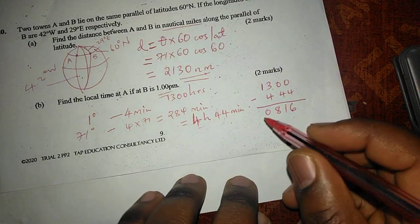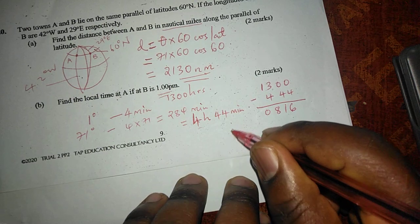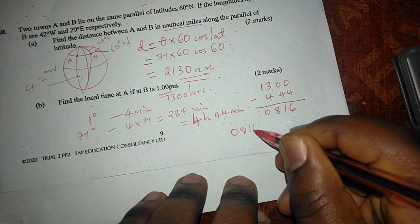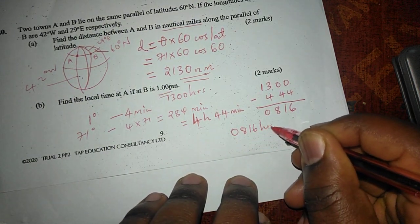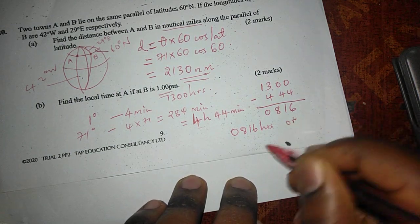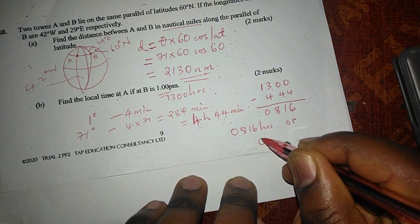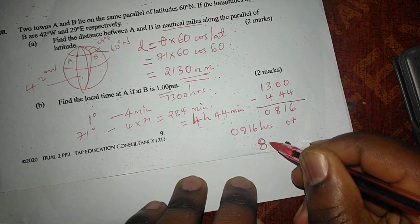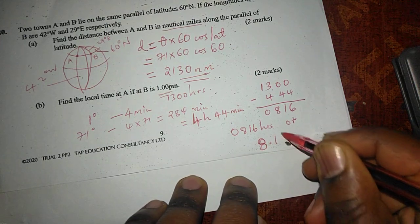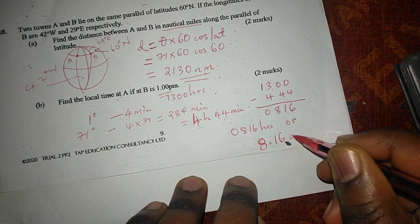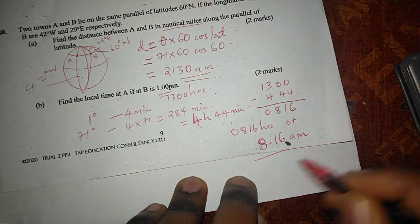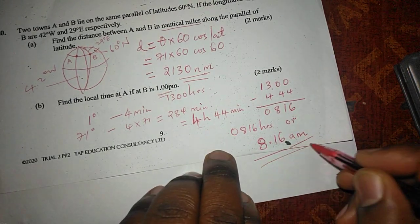Therefore, the time at A will be 08:16 hours, which simply can be expressed as 8:16 AM.